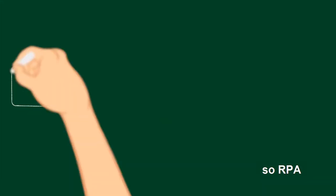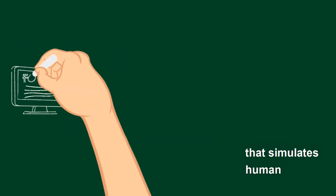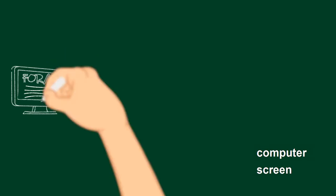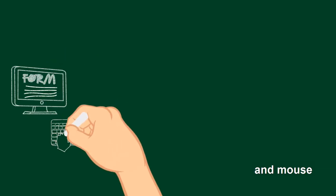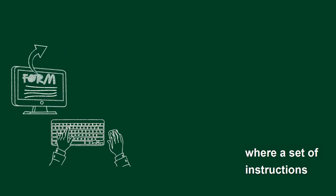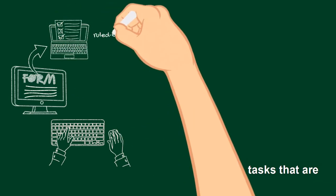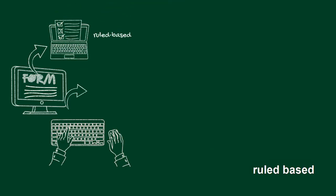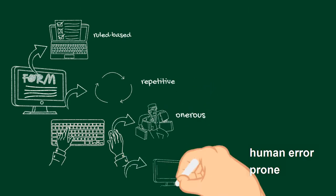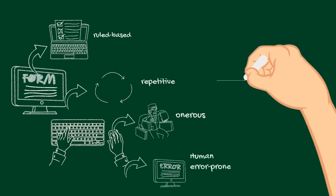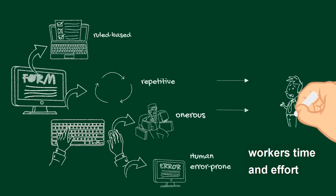RPA can be defined as a computer program that simulates humans' interactions with a computer screen, keyboard, and a mouse, where a set of instructions are defined to execute tasks that are rules-based, repetitive, onerous, and human error-prone — tasks that would otherwise eat up human workers' time and effort.